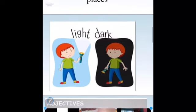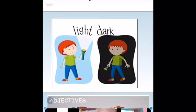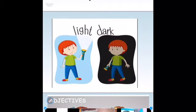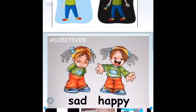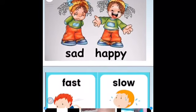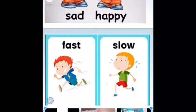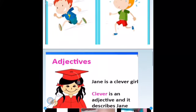As you can see the examples on your screen: light and dark. Another example: sad and happy. My adjective is describing the girl — the girl is sad and the girl is happy. It is describing. Fast and slow: the boy is fast, the boy is slow — describing the way the boy runs.